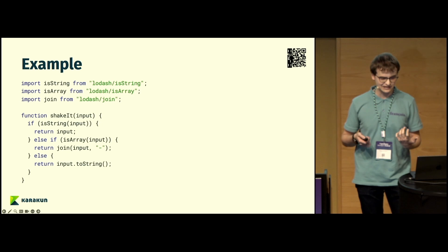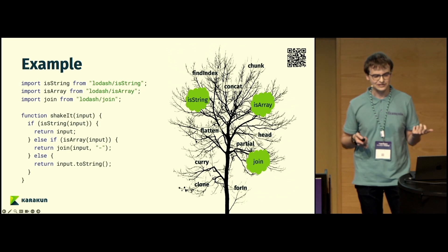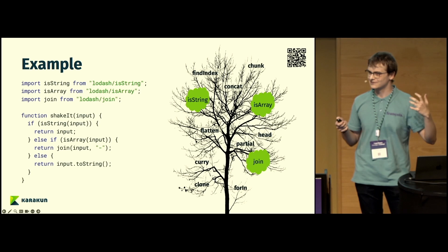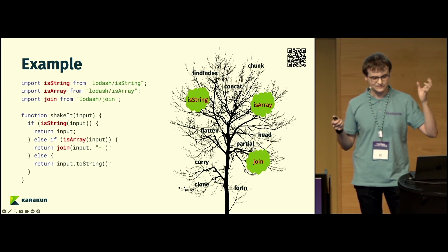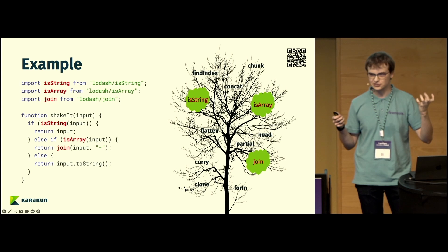To explain how tree-shaking works, if you look at the code we have here, you can see we have a simple function called ShakeIt which has some methods that it uses from Lodash, which is a popular utility library. What you can imagine with tree-shaking is imagine having a tree, and you can see we have all of those methods that are in Lodash that are kind of branches and leaves on the tree. You can see isString, isArray, and join. The ones we use are marked as leaves because they are kind of attached to the tree strongly. The other methods we don't use are hanging loosely in the tree itself.